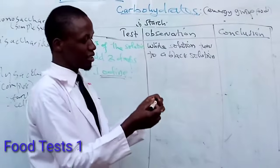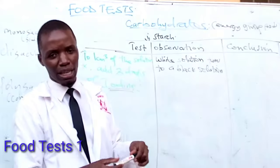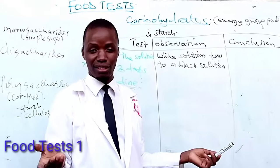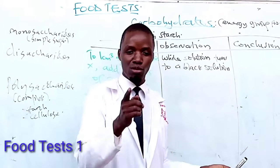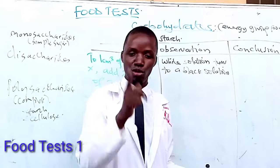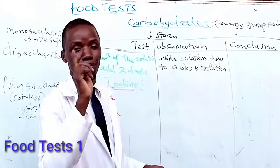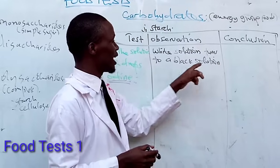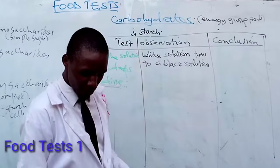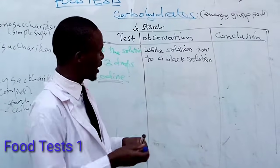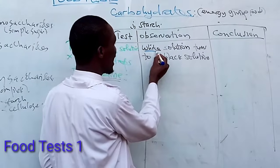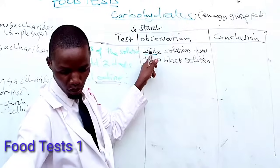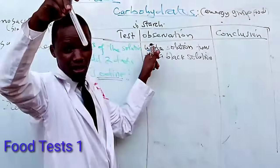Some students like saying 'blue-black,' but I don't recommend blue-black because that color is ambiguous. You should either say blue or black. If you have seen blue, say blue. If you have seen black, say black. So a white solution turns into a black solution — that is your observation. When writing your answer, you should mention the color of the initial solution, which was white.